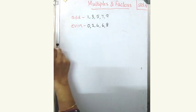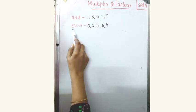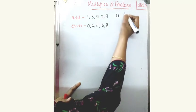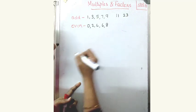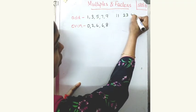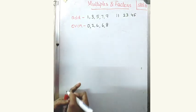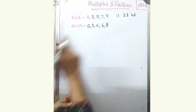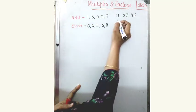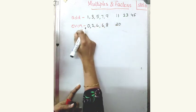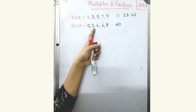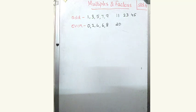We know what is an odd number and what is an even number. 11 is an odd number. 23 is an odd number. 45 is an odd number. Any number ending with 1, 3, 5, 7, or 9 is an odd number. 20 is an even number. Any number ending with 0, 2, 4, 6, or 8 is an even number.